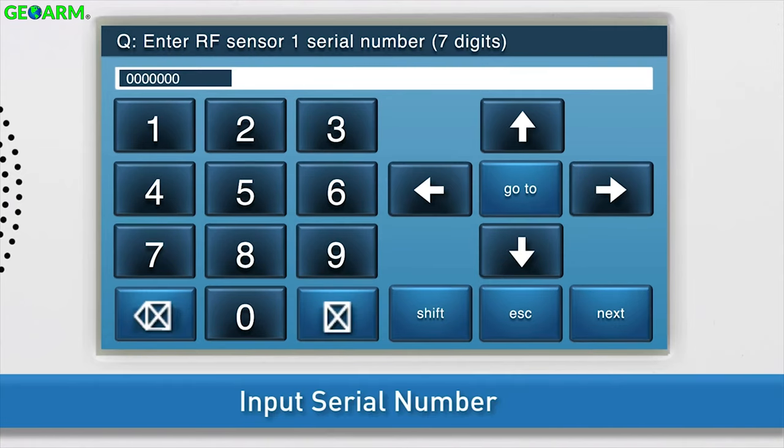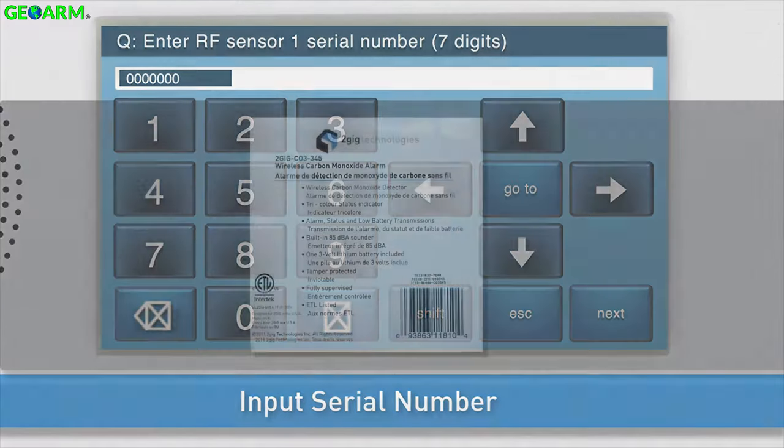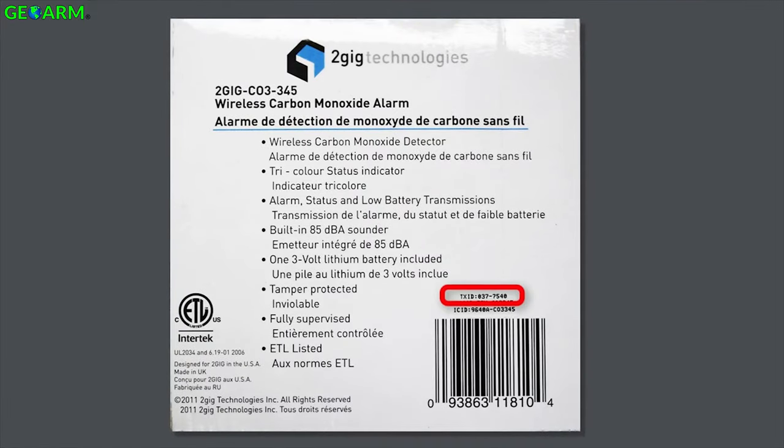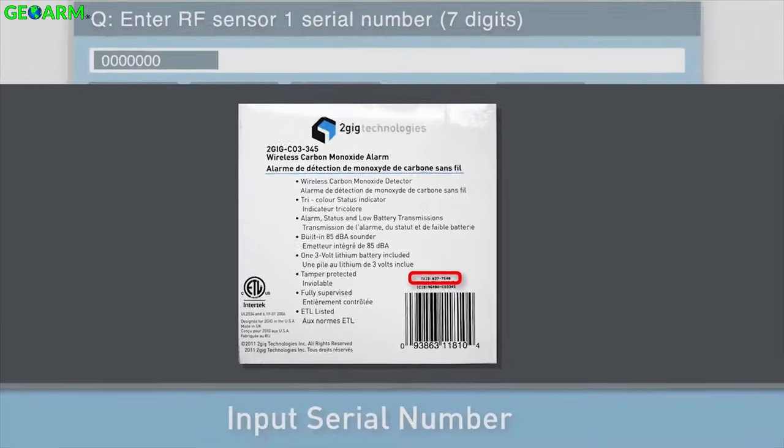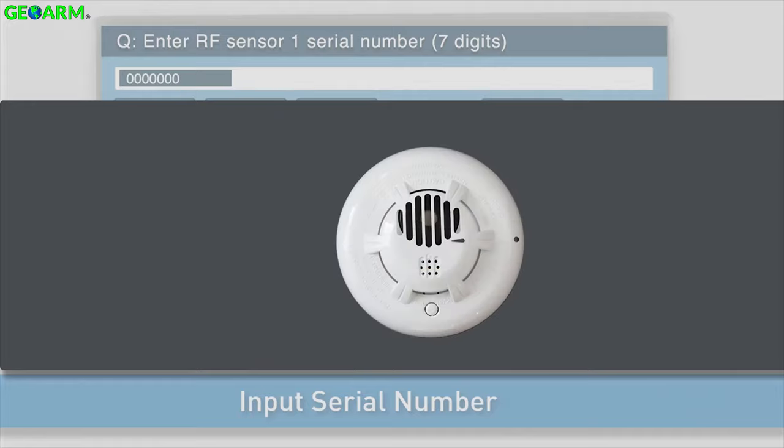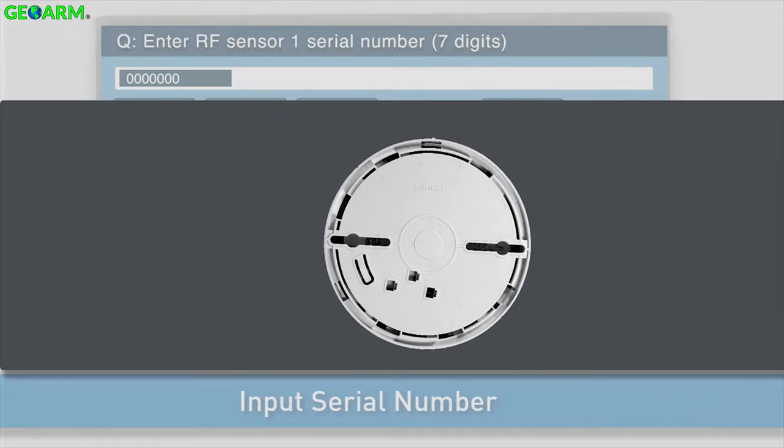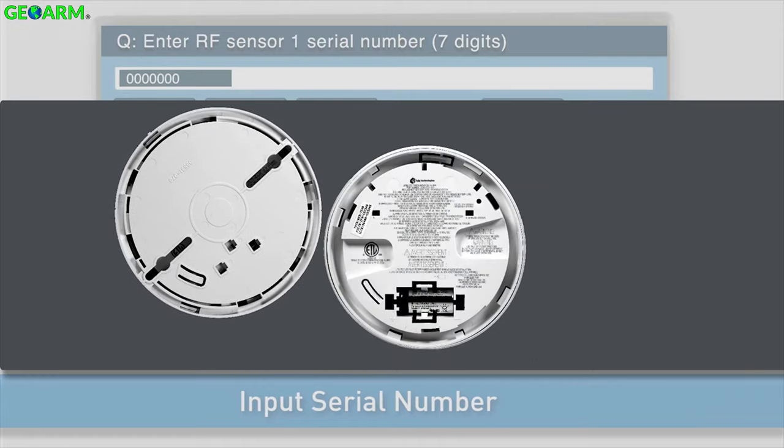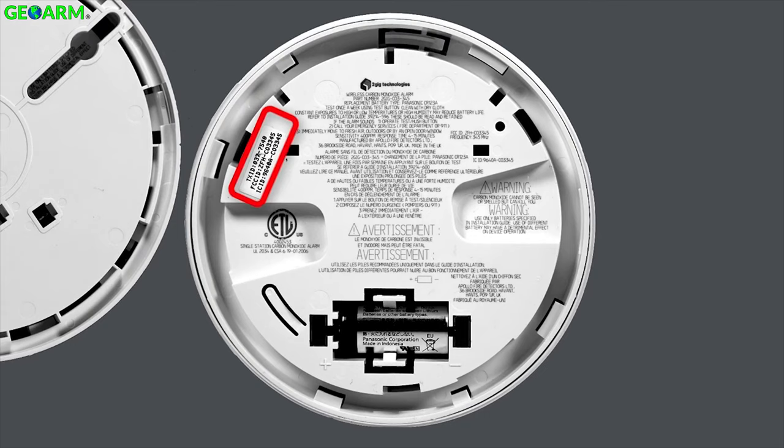Next, input the serial number for the carbon monoxide detector. You will find the serial number on the detector's box labeled as a TXID number. The number is also shown on a sticker on the detector itself. Remove the detector from its mounting base by twisting the detector counter-clockwise. You will then see a sticker with the TXID number.